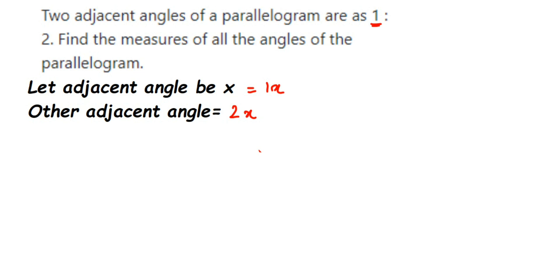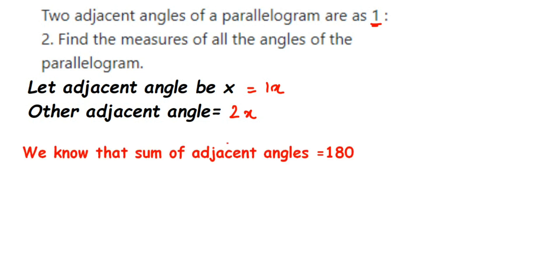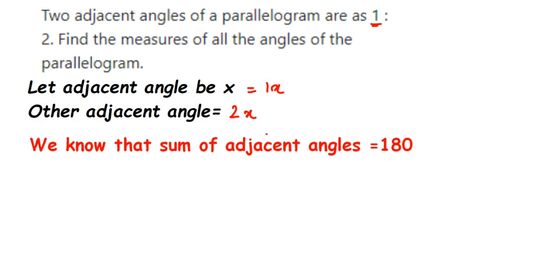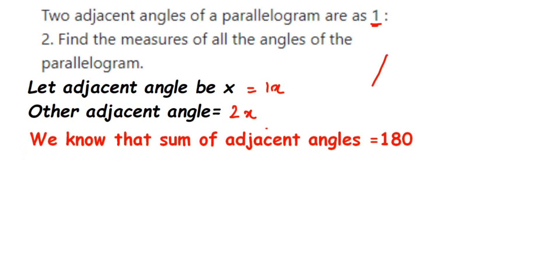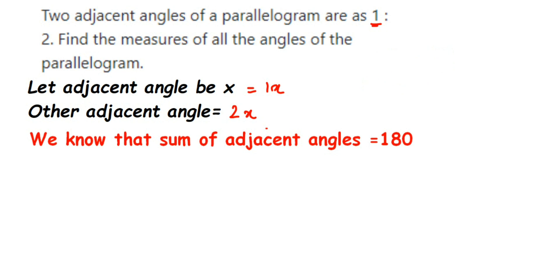Now we also know one important property of a parallelogram: if you add two adjacent angles, the sum is always 180 degrees. Whenever you add any two adjacent angles — like this pair or that pair — the sum is always 180 degrees. So here we know the two adjacent angles are X and 2X, and if we add them it should equal 180 degrees.